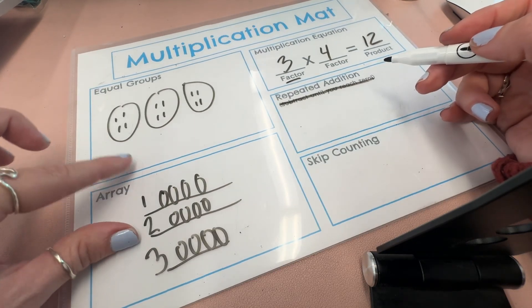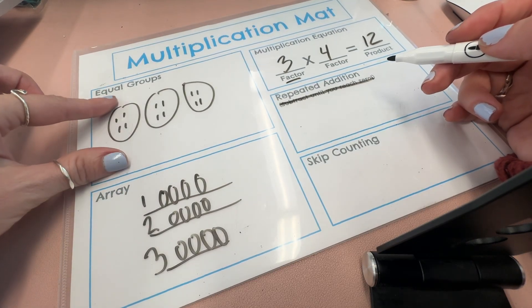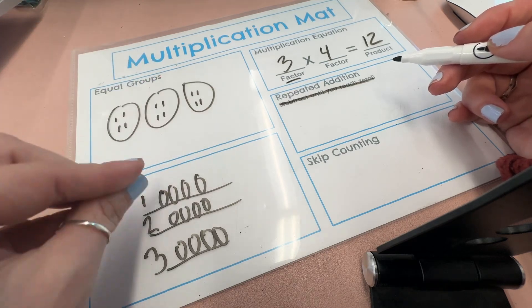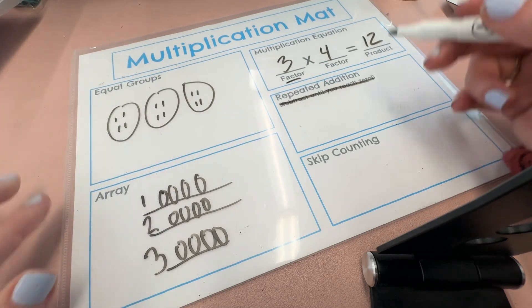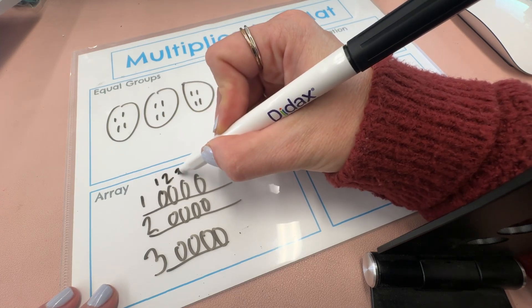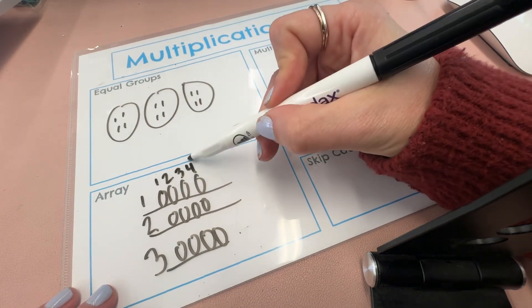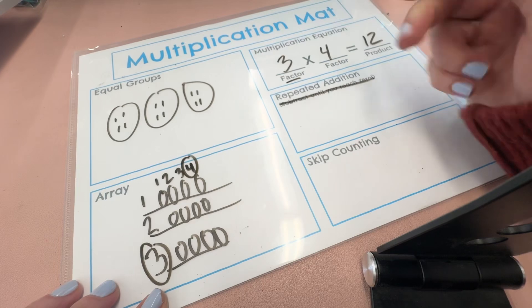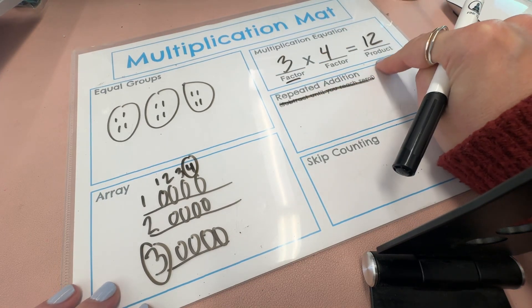So rows and columns, equal groups, they all have equal amounts in each row or in each group. They can also count up the columns in an array. One, two, three, four. And notice that four and three are the factors we're multiplying to find the total.